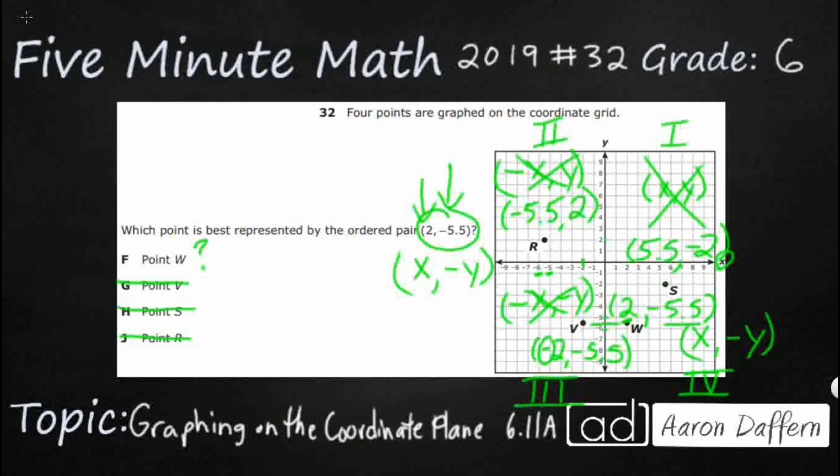So we are going to choose point W, which has got this (2, -5.5).